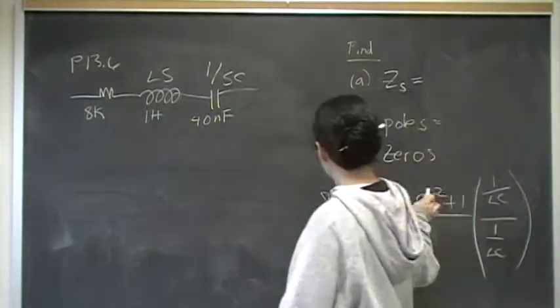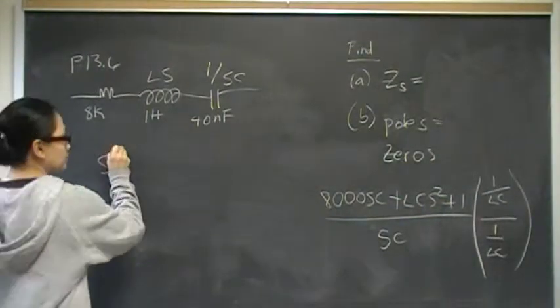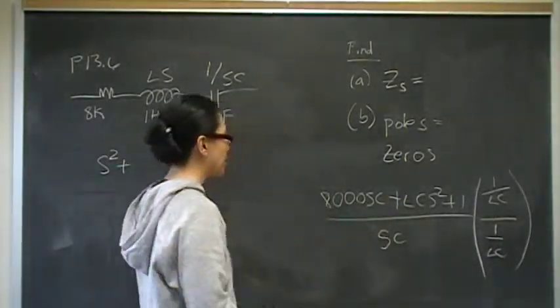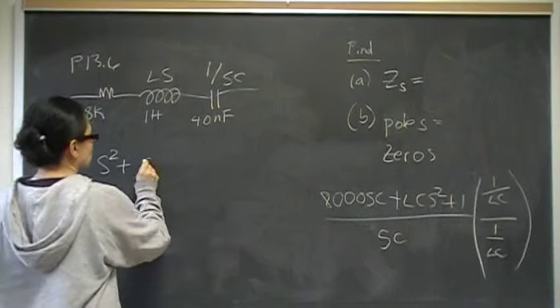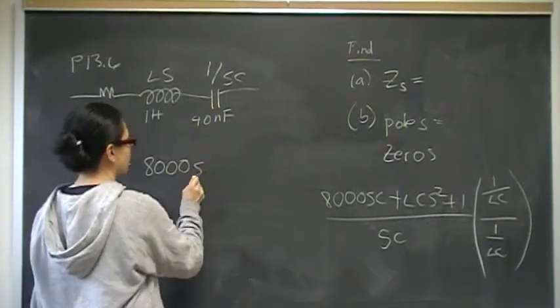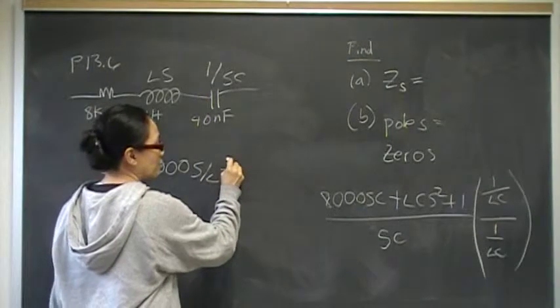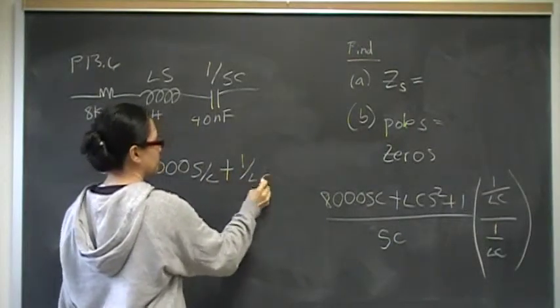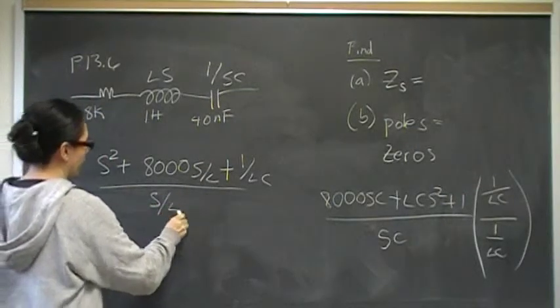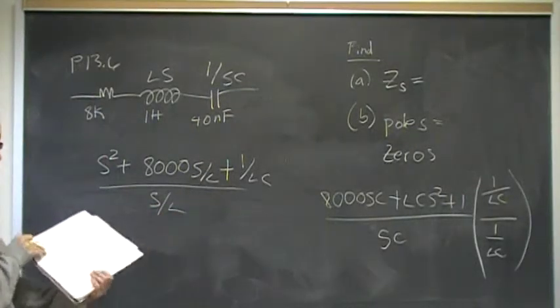When you do that, this coefficient becomes S squared, and the C's cancel out. So, we have 8,000 S over L, and then plus 1 over Lc. Then, on the bottom, the C's cancel out, and then we have S over L.